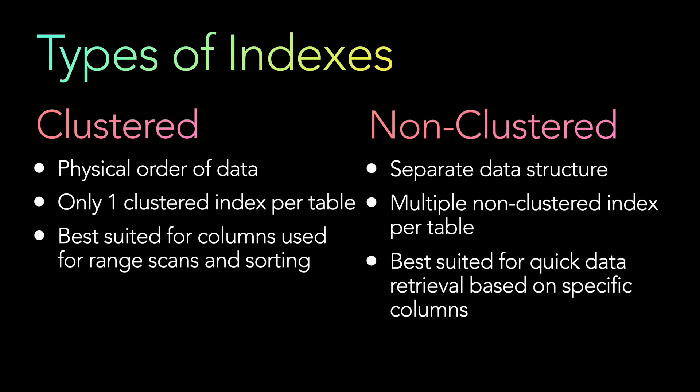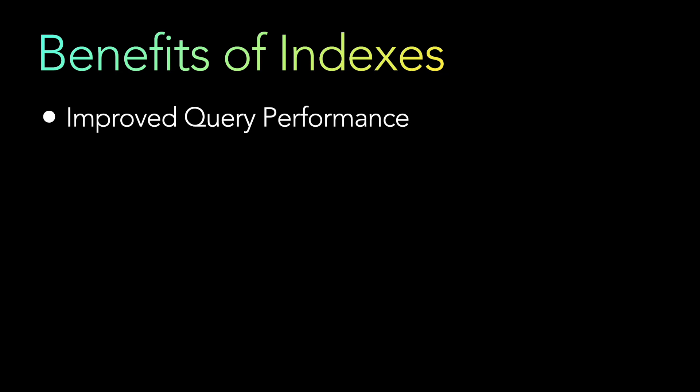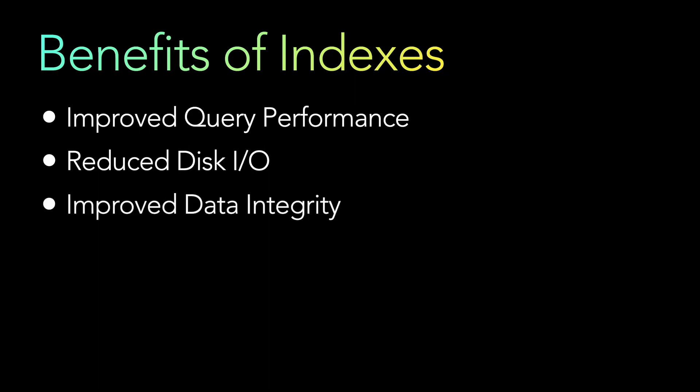Using indexes is one of the primary ways to achieve faster data retrieval. First, improved query performance: indexes allow the database engine to quickly locate relevant data based on query conditions, avoiding a full table scan which is slow and inefficient — especially on large tables. Second, reduced disk I/O: indexes allow the database engine to read only the relevant index pages instead of the entire table, resulting in faster query processing and lower system resource usage.